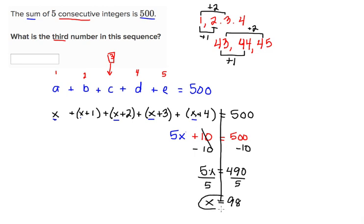And we found an answer. However, that's not the answer that we're looking for. We found the first term in the sequence, which is 98. Remember this problem is asking for the third term. So we'll plug in x for the third term. One, two, three. 98 plus 2 tells us that the third term in the sequence is 100.